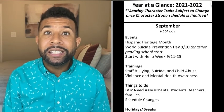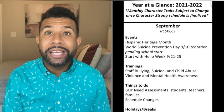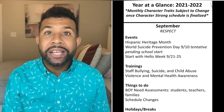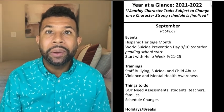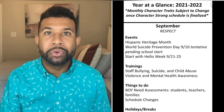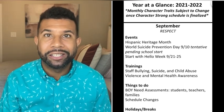The four sections are: events, trainings, things to do, and character traits. I'm going to briefly walk through each one of these sections with you.